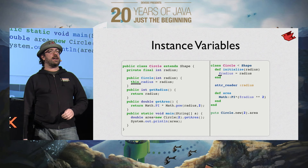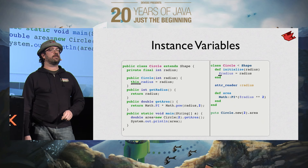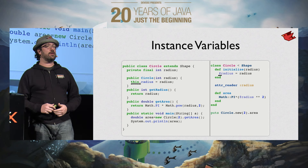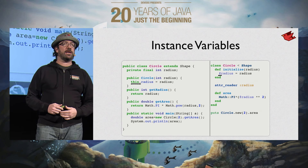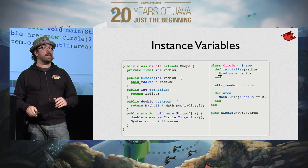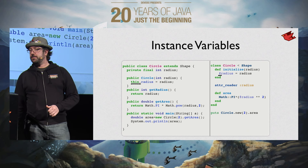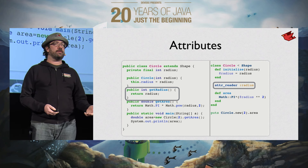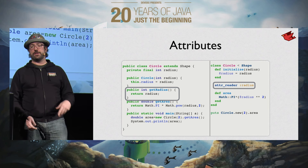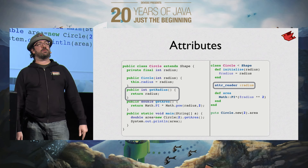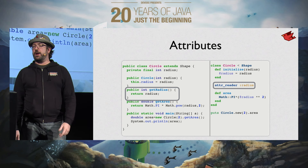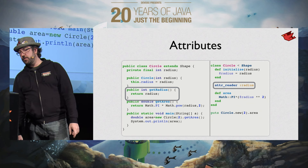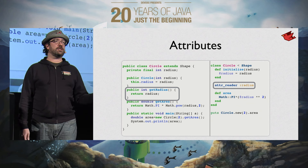Instance variables in Ruby always have an '@' sigil — so you're never confused whether you're working with a local variable or an instance variable. Ruby has rich support for metaprogramming. A simpler feature is defining attribute methods — on the Java side you manually write getRadius, but in Ruby you just say 'attr_reader :radius' and it's done. The rest is generated behind the scenes.